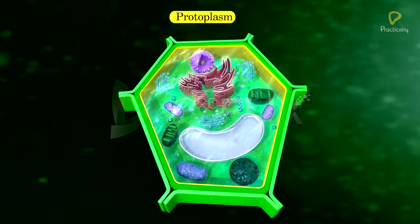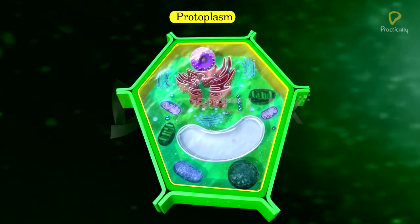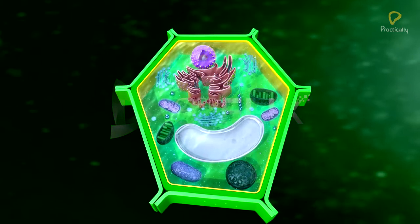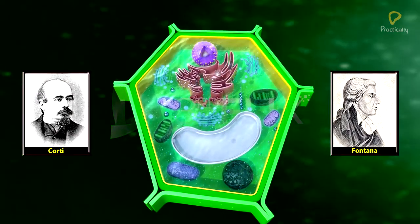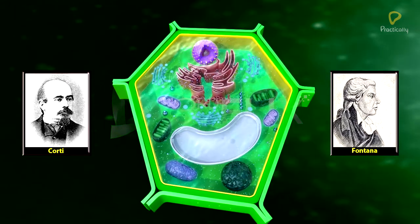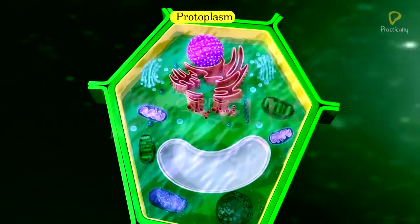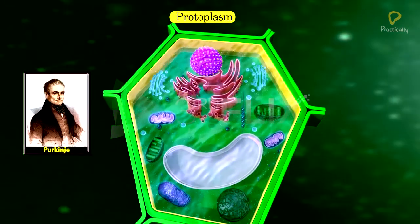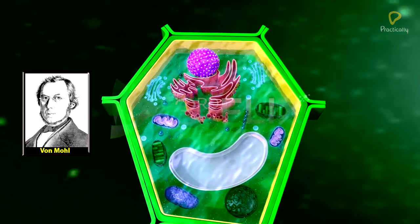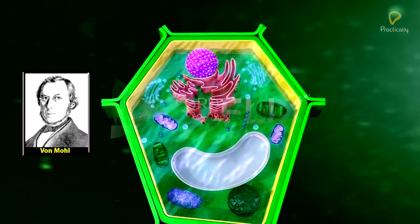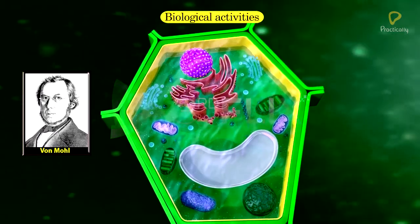Protoplasm. The living, jelly-like substance found in a living cell is called protoplasm. Protoplasm was discovered by Corti and Fontana. The term protoplasm was coined by Perkinje. Von Mohl described protoplasm as the dynamic center for all the biological activities in a living cell.